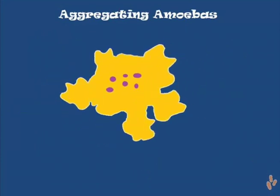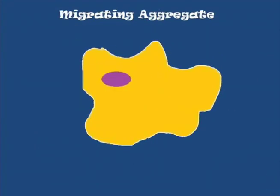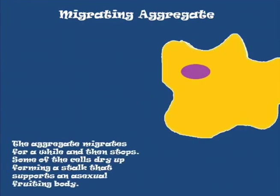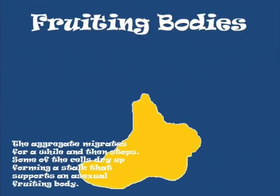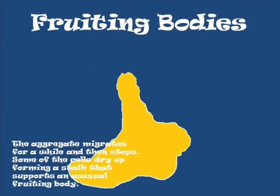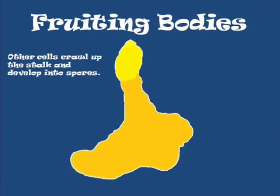Step 1. Step 2. The aggregate migrates for a while and then stops. Some of the cells dry up after forming a stalk that supports an asexual fruiting body. Step 3. Other cells crawl up the stalk and develop into spores.